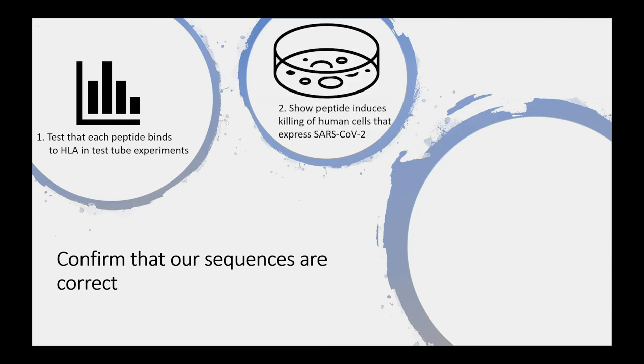Next, we will show that the peptides can induce the killing of human cells that express the SARS-CoV-2 virus using human stem cells. And then finally, we want to confirm that, at least in animal models, that the peptides will induce a protective T cell response that will protect from SARS-CoV-2 infection.